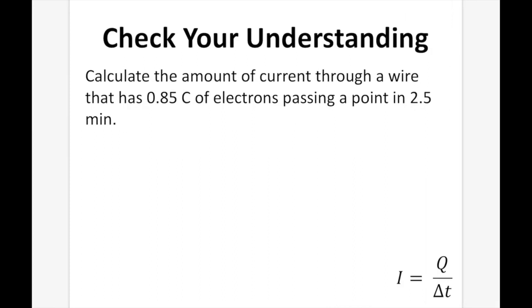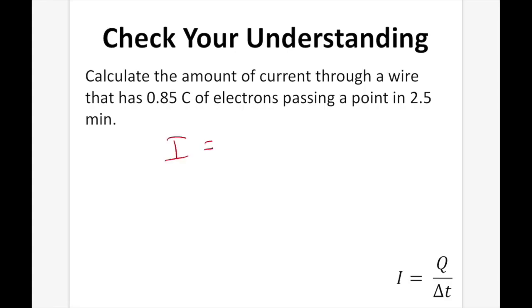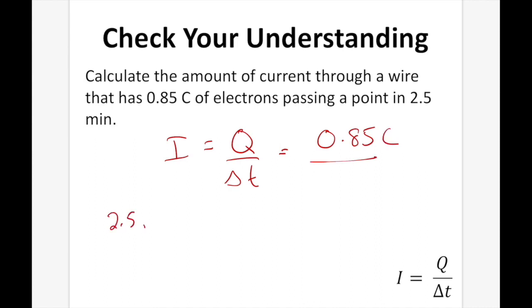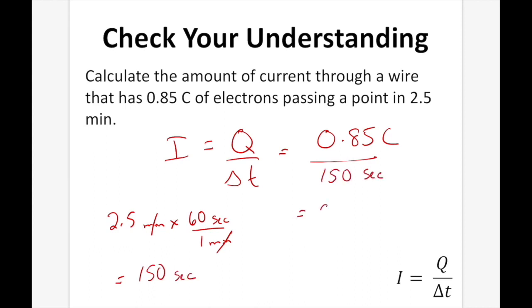Check your understanding. Calculate the amount of current through a wire that has 0.85 coulombs of electrons passing a point in 2.5 minutes. Our formula is I = Q / Δt. I is our unknown. Q is 0.85 coulombs, and our time is 2.5 minutes. Converting: 2.5 minutes × 60 seconds per minute = 150 seconds. So I = 0.85 / 150, which gives a current of 0.0057 amps, which is also equal to 5.7 milliamps.